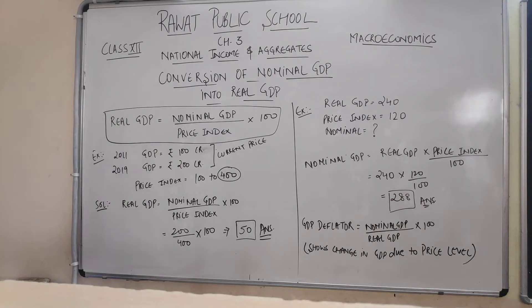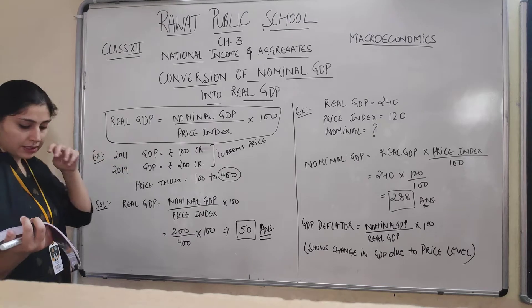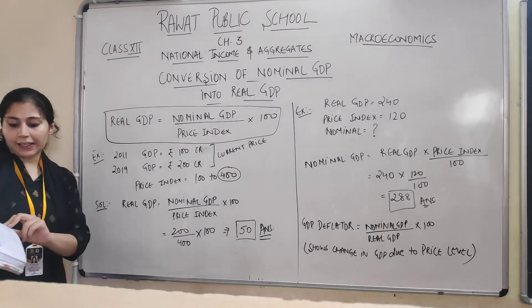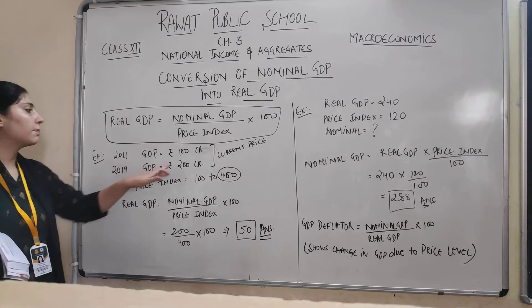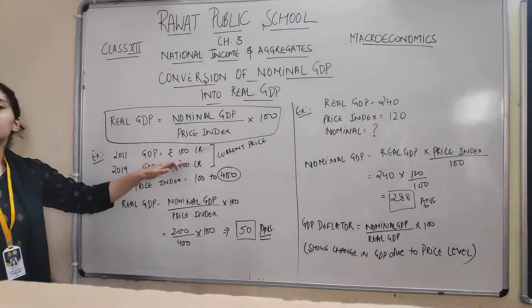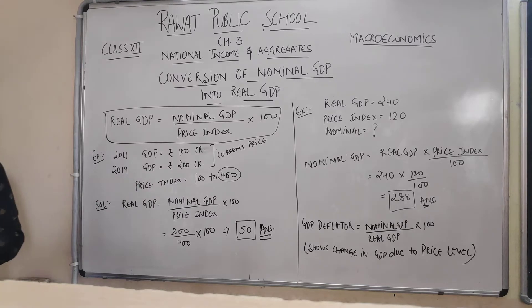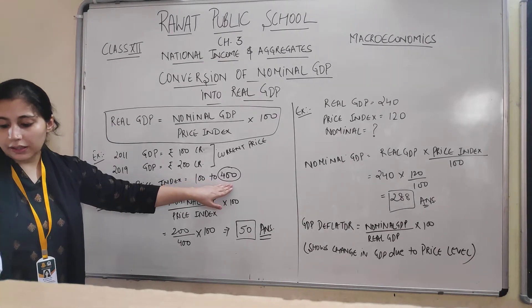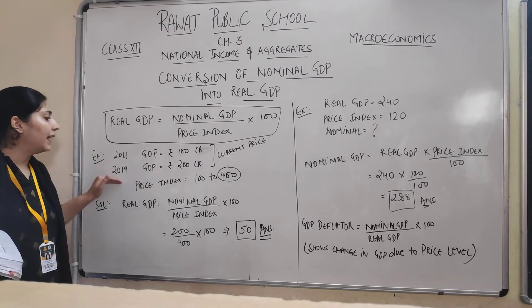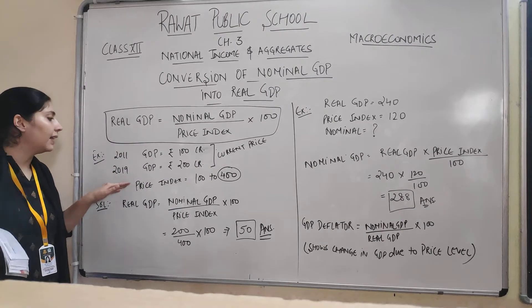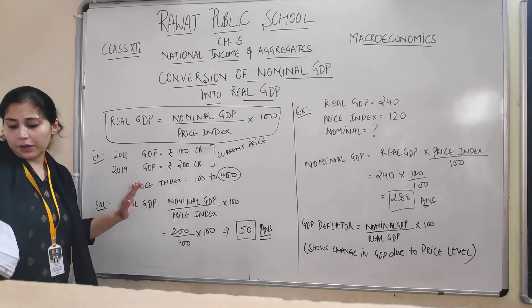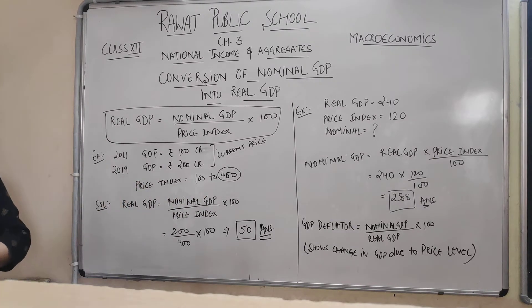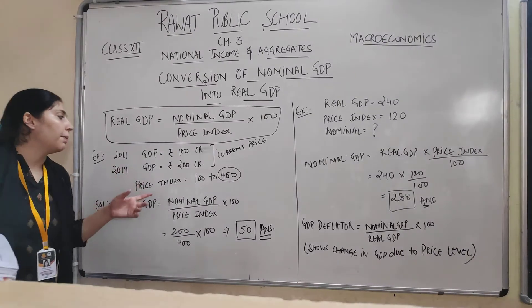In 2019, nominal GDP is 200 crores at current prices. You also have to determine the price index, which has increased from 100 to 400 during the period 2011 to 2019. So the price index has increased from 100 to 400 within the same period. Using this, GDP at current prices is converted into real GDP.